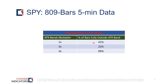With 2x bands it dropped by about half to 22 percent, and with 3x bands it dropped again by about half to nine percent. So the rough numbers are similar to the daily data, confirming that filtering continues to be effective using the bands even at the very short five-minute chart level.